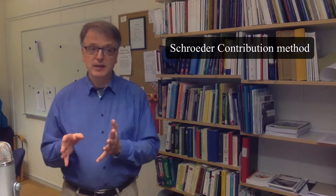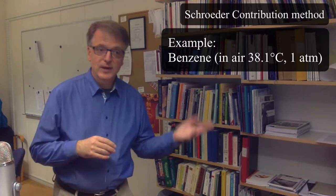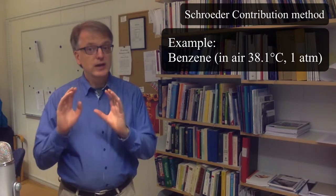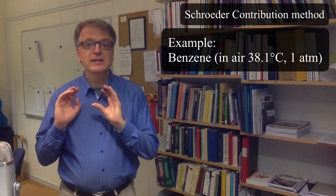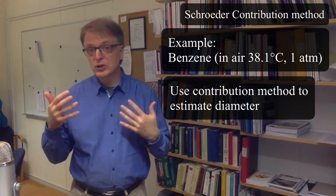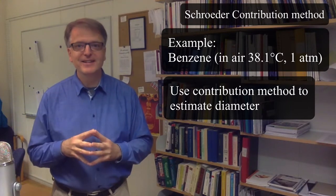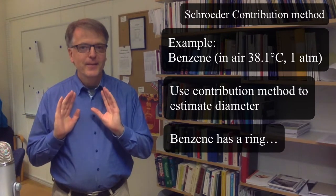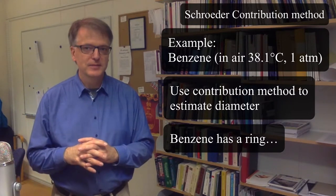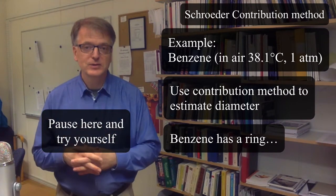So let's do an example. Let's use benzene in air as we have done before. And your task now is to try to estimate the size of that molecule, so the characteristic collision diameter, using the Schroeder contribution method. And there's one trap here. Benzene has a ring. So how do you deal with that? So pause here and then we go into the solution.